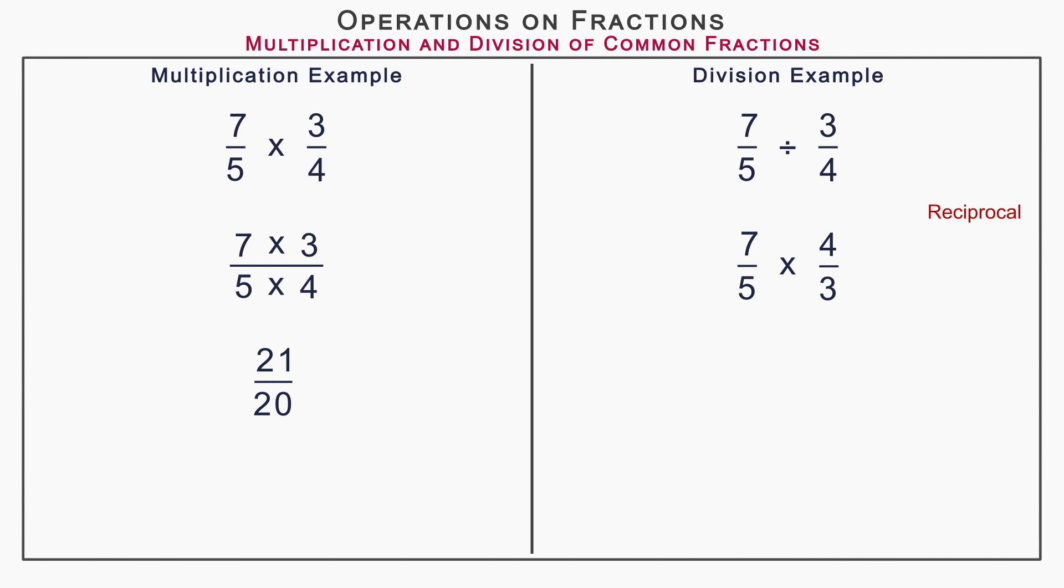So we get 7 upon 5 into 4 upon 3. Now we directly multiply the numerators and denominators, that is 7 into 4 upon 5 into 3. On multiplication, we get 28 upon 15.